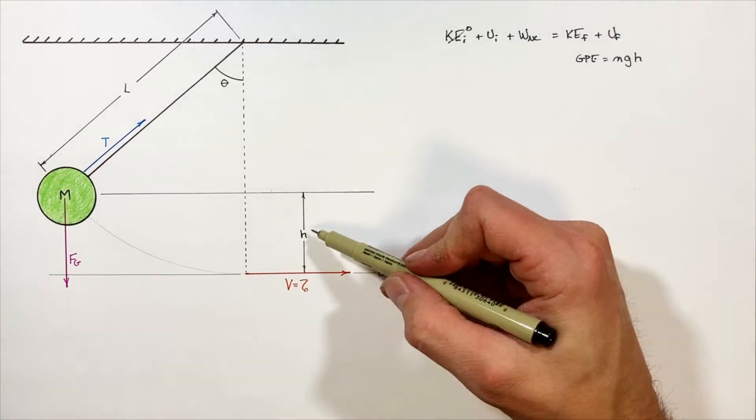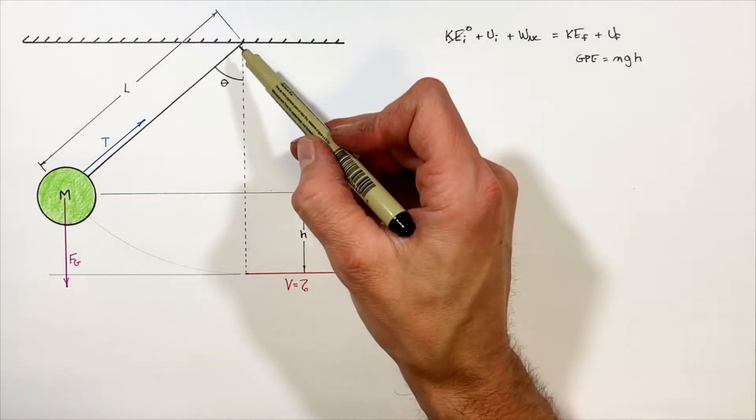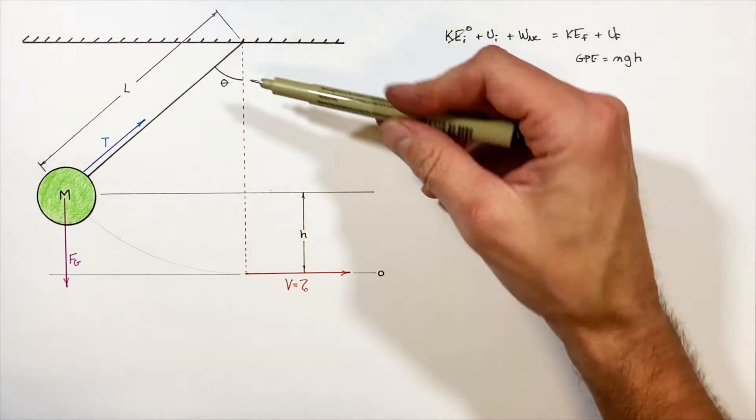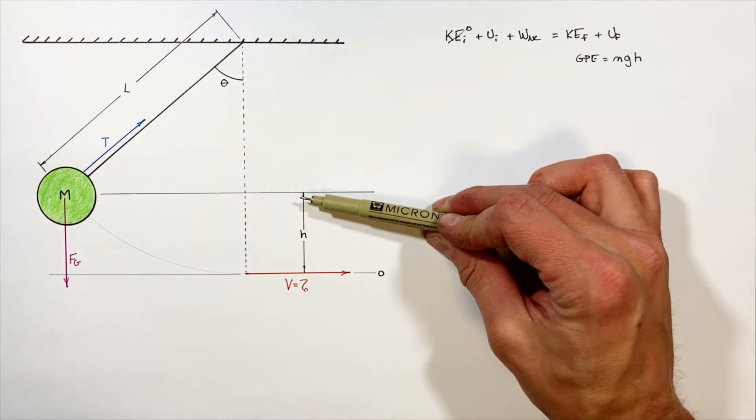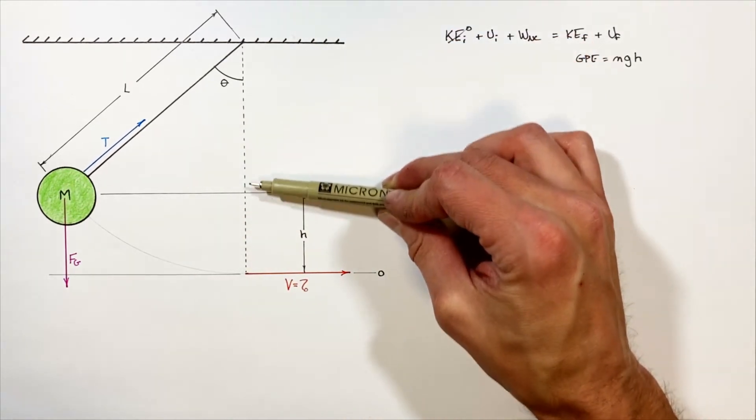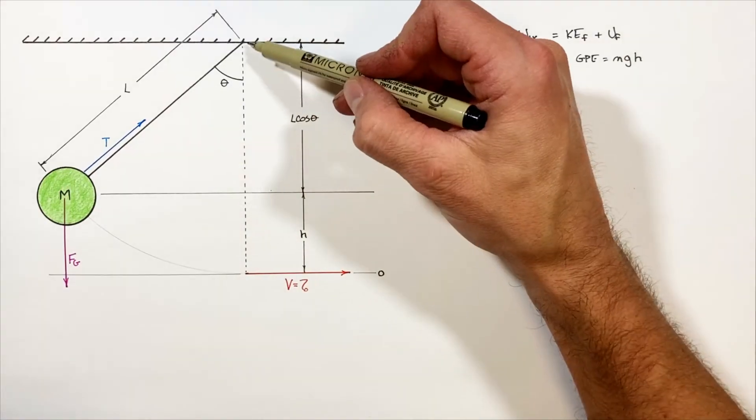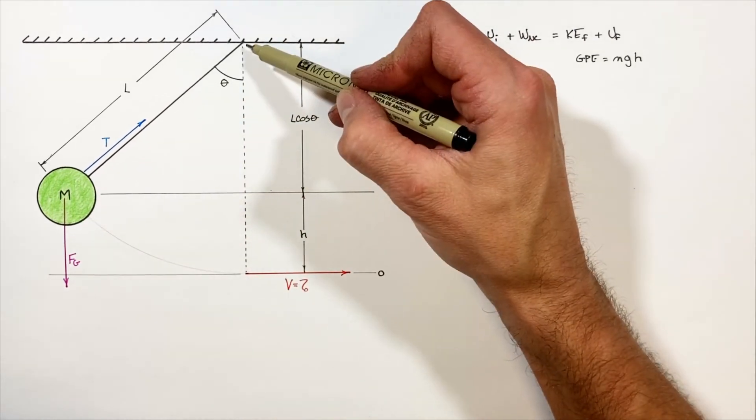To solve for this height, we need to look at this triangle as though it is a right triangle. If we know the length of the string is some length L and this angle here is theta, then the distance from the ceiling down to the mass itself is going to be L cosine theta.